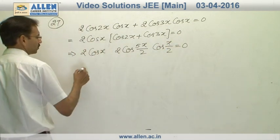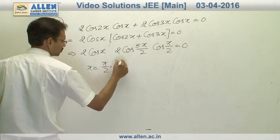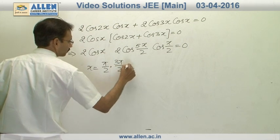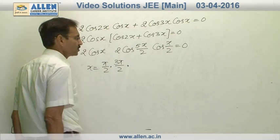Now cos x is 0 gives us 2 solutions. One is π by 2 and other is 3π by 2. Cos x by 2 equals to 0, let us consider first.